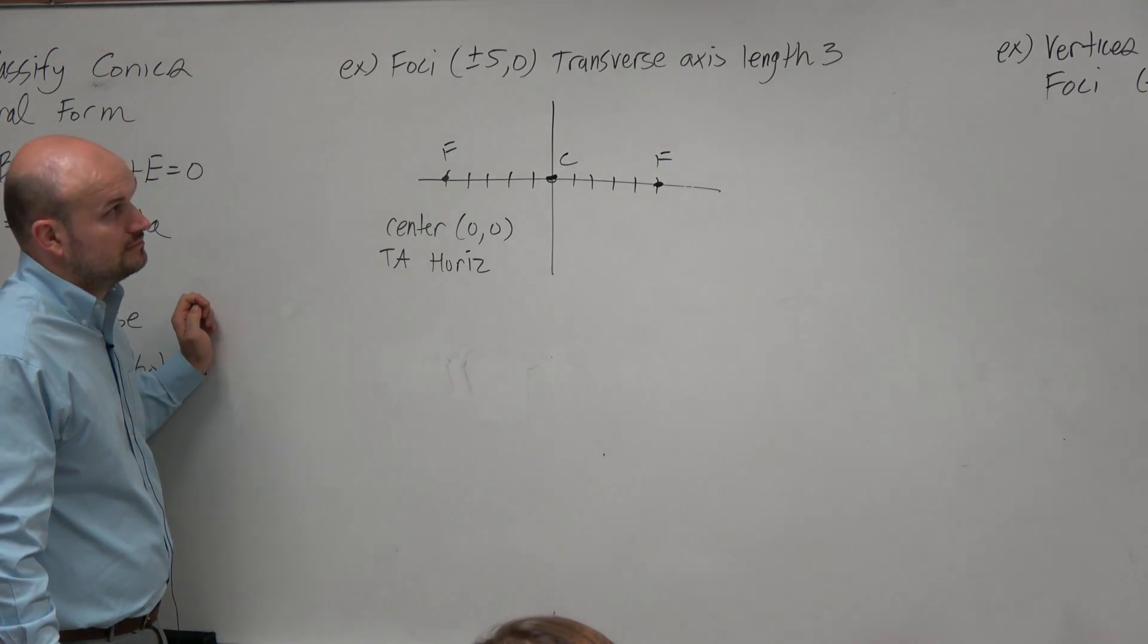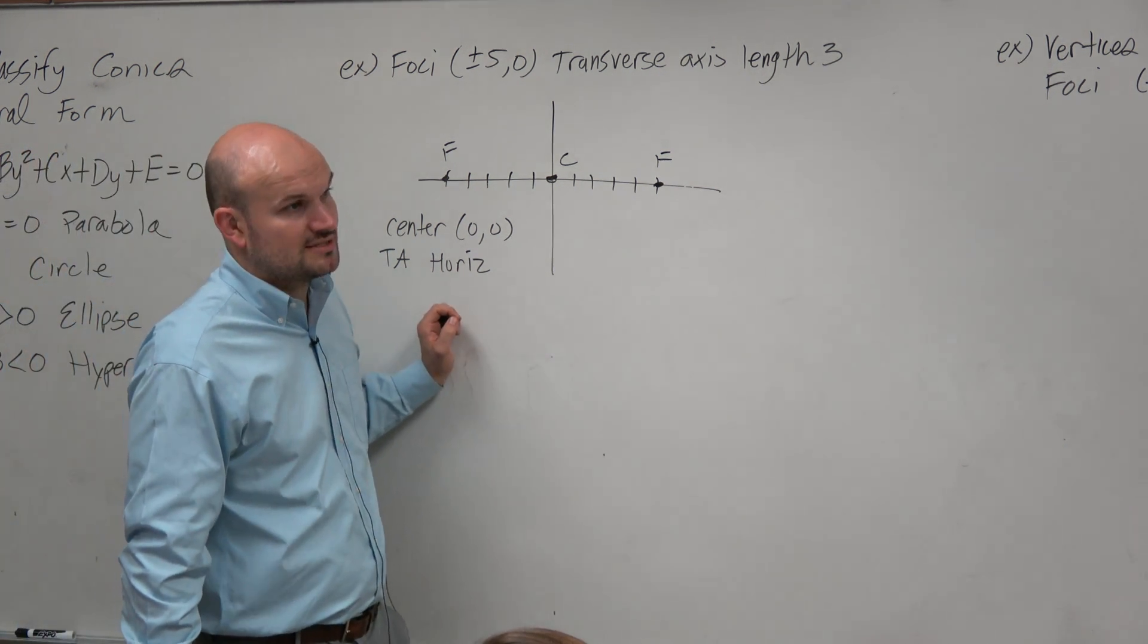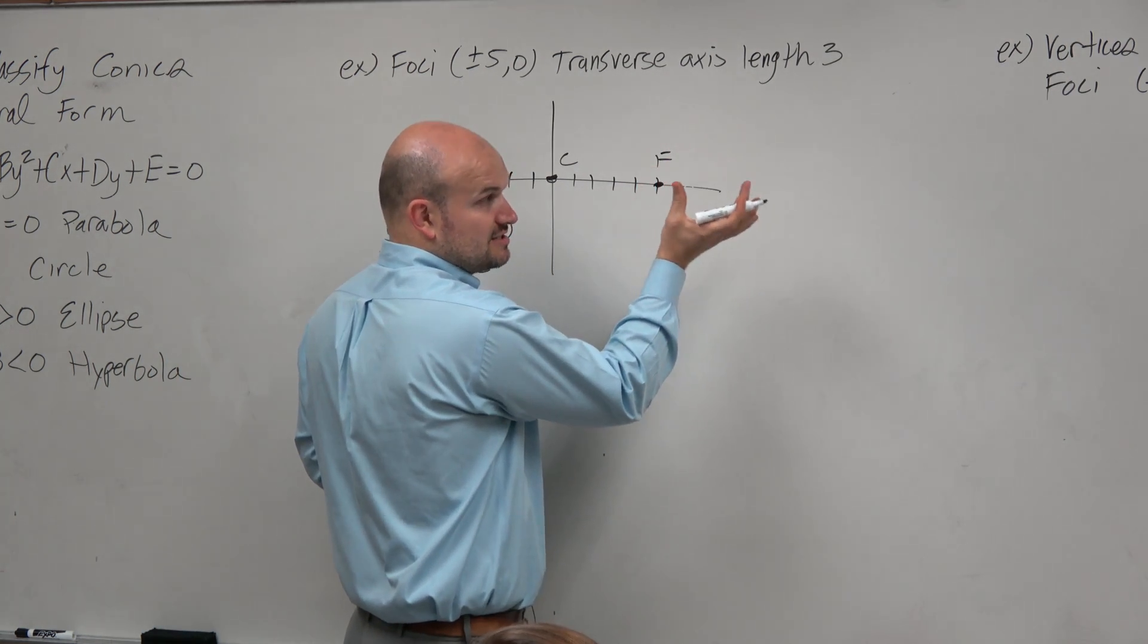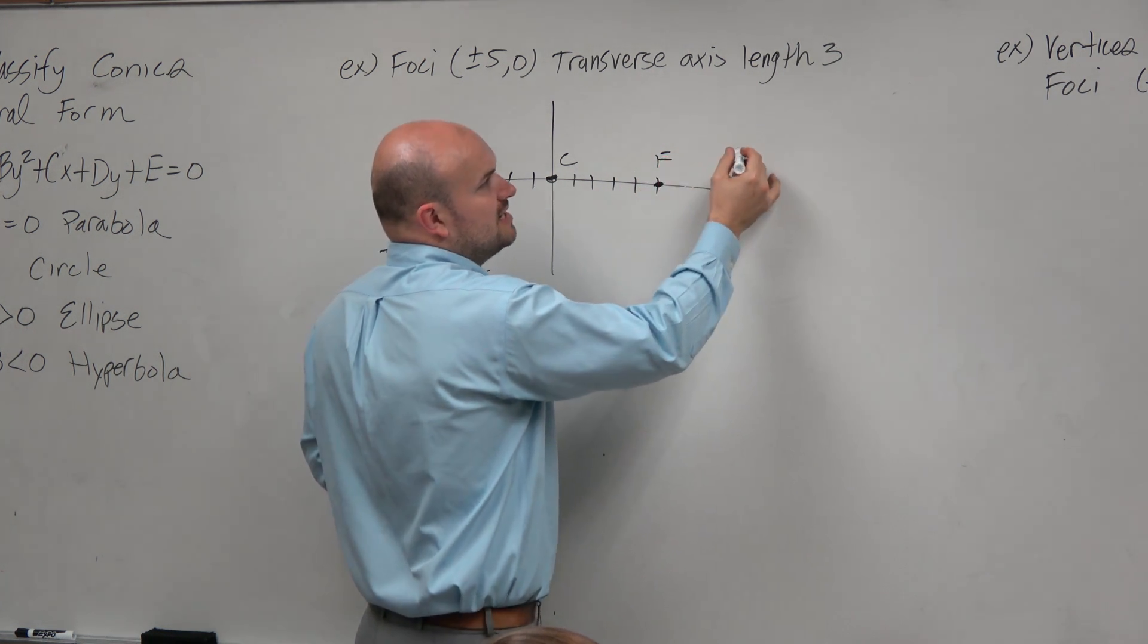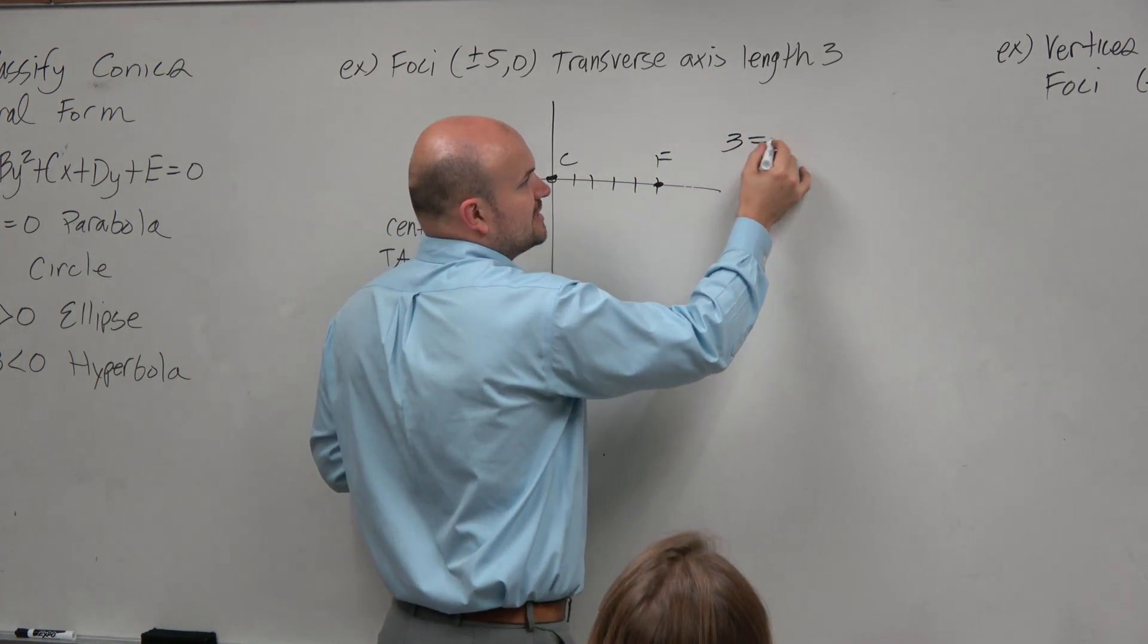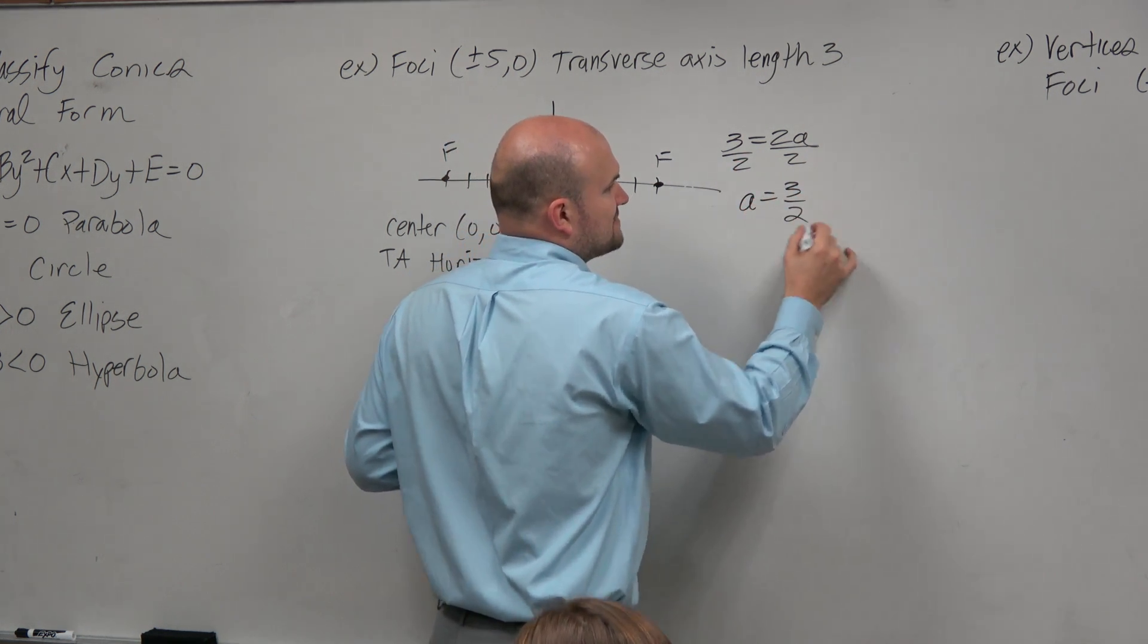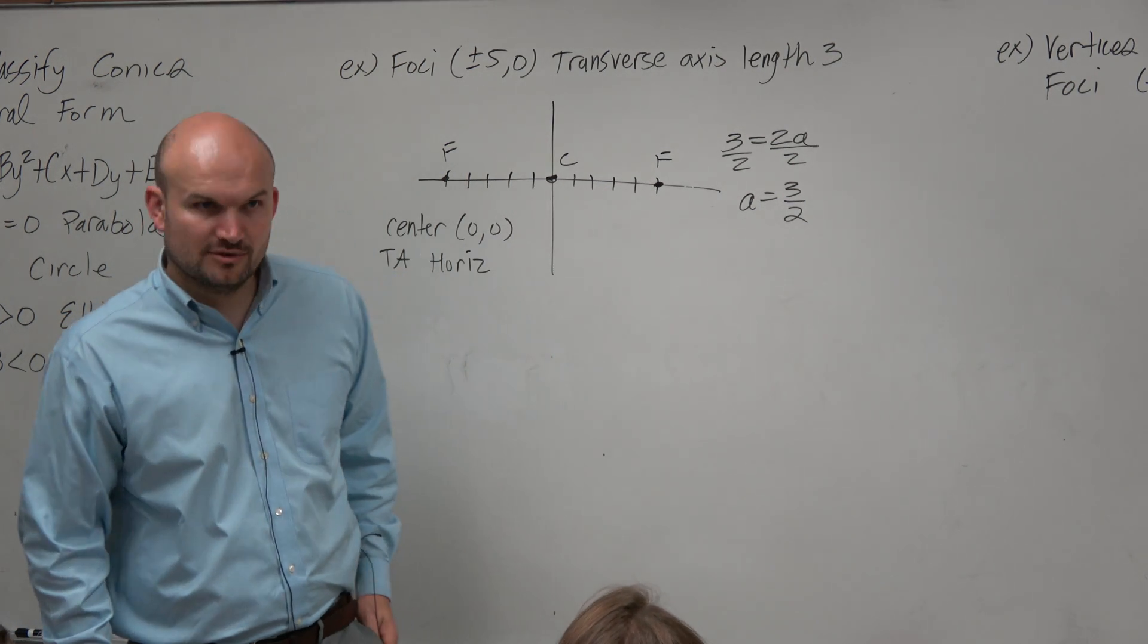But doesn't the transverse axis, like how high is the distance from vertex to vertex. So remember, the distance from vertex to vertex is, well, that's the length of your transverse axis. So we could say that 3 is equal to 2a. That means a is now equal to 3 halves. So now we're going to do a little bit of fraction operations. That's okay. We can deal with fractions.